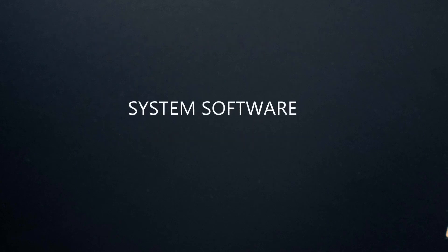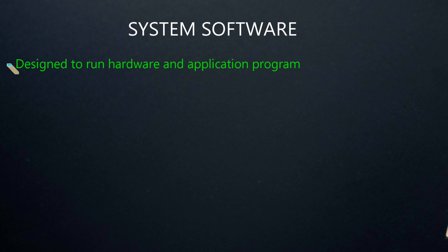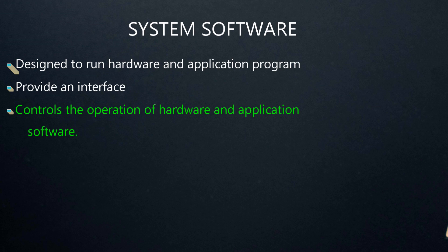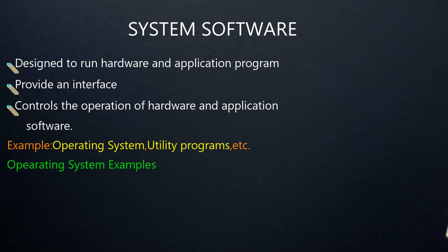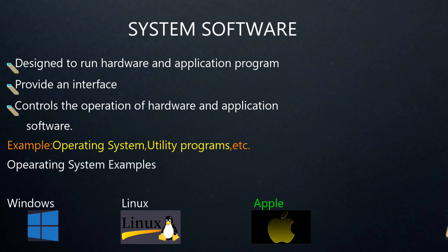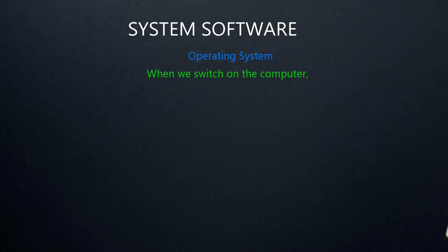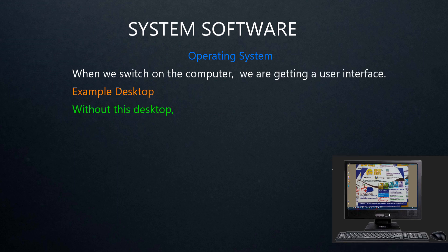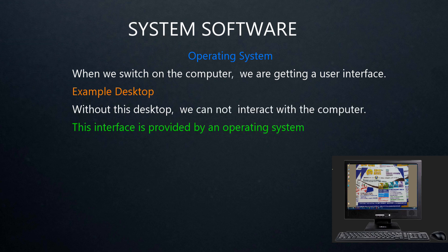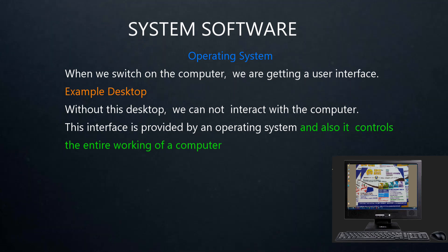System software is designed to run hardware and application programs. It provides an interface and controls the operations of hardware and application software. Examples of system software are operating system, utility programs, etc. Examples of operating systems are Windows, Linux, Apple, etc. When we switch on the computer, we get a user interface — for example, the desktop. Without this desktop, we cannot interact with the computer. This interface is provided by an operating system, and it also controls the entire working of a computer.